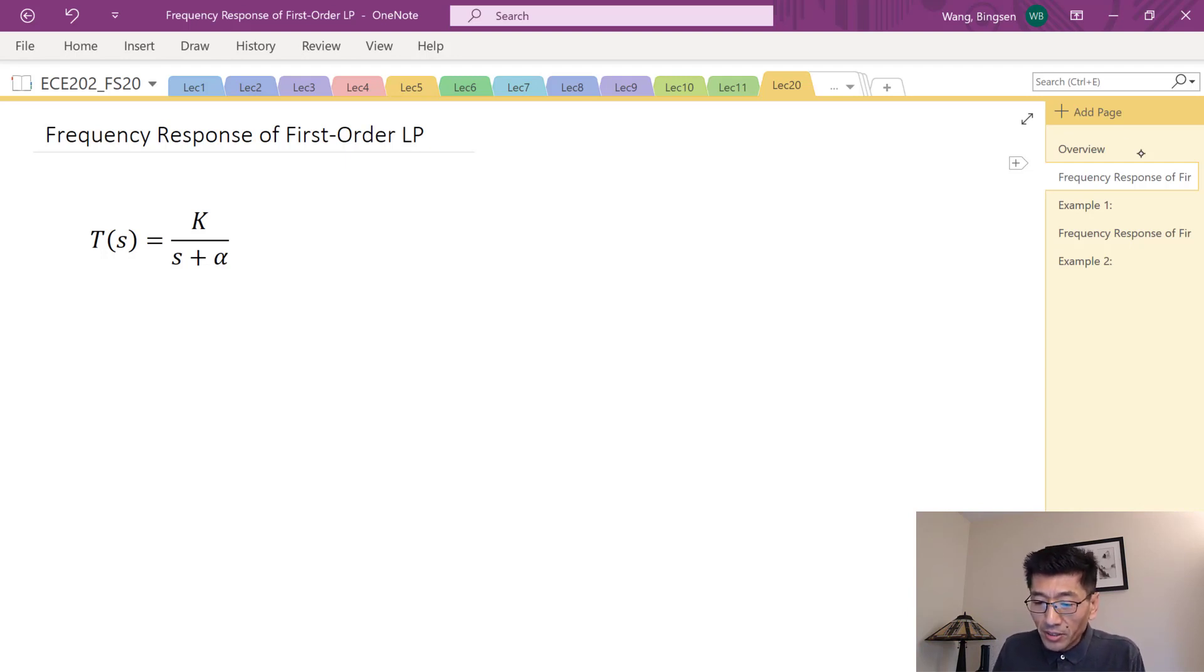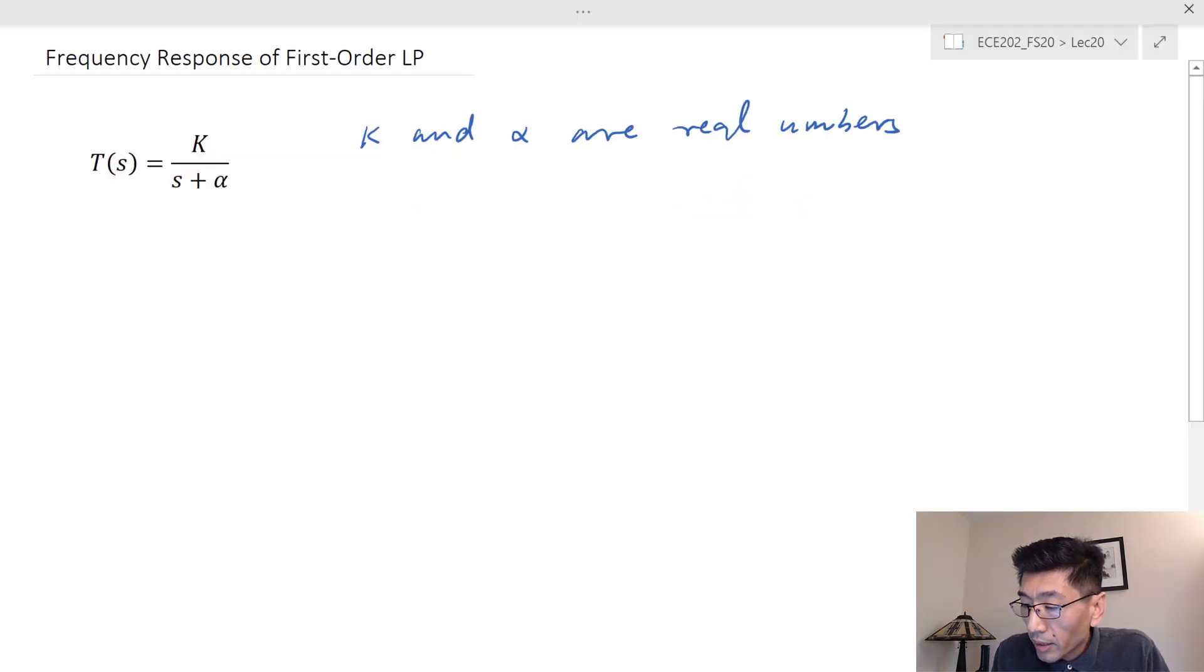Let's get started. We have a transfer function T(s) equal to k over s plus alpha. In this case, k and alpha are real numbers, and k could be positive or negative, but alpha is positive only.